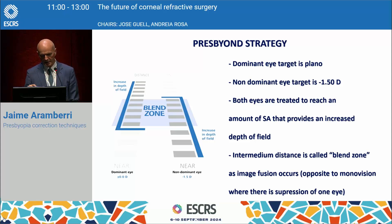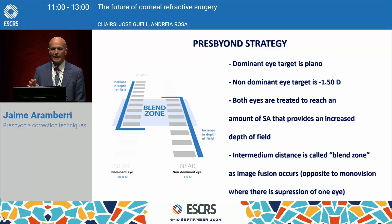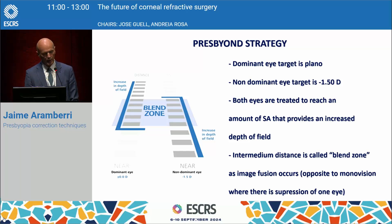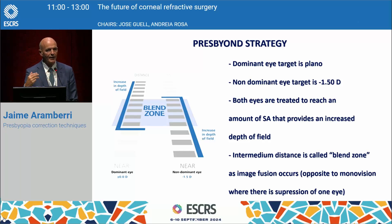The intermediate distance is what they call the blend zone, because here image fusion occurs — opposite to monovision, where precisely at that distance there is normally some suppression.